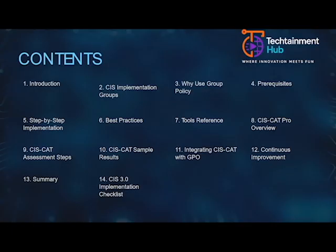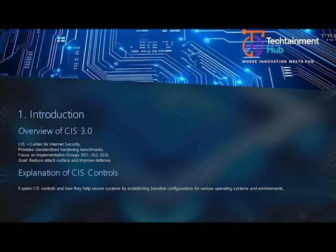The Centre for Internet Security, or CIS, provides globally recognised benchmarks for securing systems and software. CIS benchmarks define specific configurations that help reduce vulnerabilities and harden the system. Implementation groups — IG1, IG2, and IG3 — allow organisations to apply controls based on their size and risk exposure. Our focus today is IG3, which targets enterprise-level protection and advanced security posture.